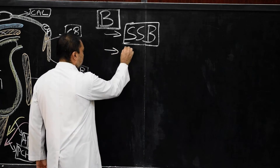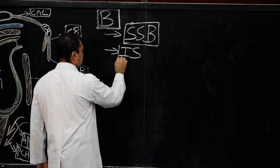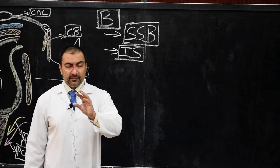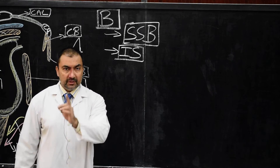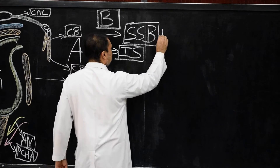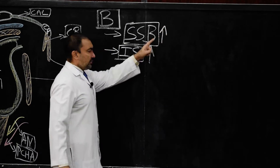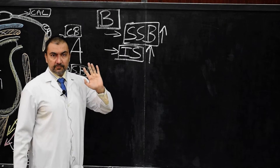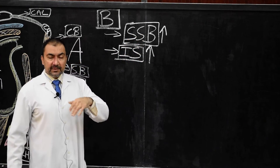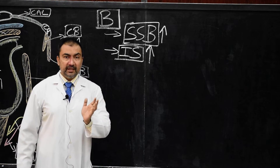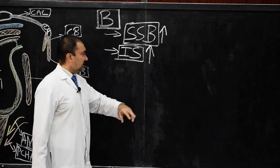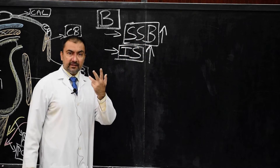The second bursa is the infraspinatus bursa. This infraspinatus bursa, present around the infraspinatus muscle, will also communicate with the shoulder joint. So both the subscapular bursa and the infraspinatus bursa are communicating bursae with the shoulder joint. In MCQs the question is: which bursa is a communicating bursa to the shoulder joint? Both subscapular bursa and infraspinatus bursa communicate with the shoulder joint.